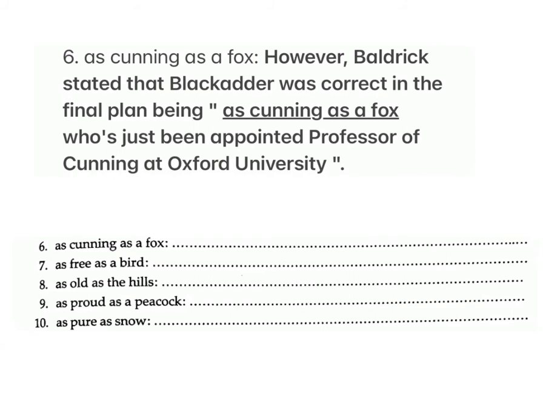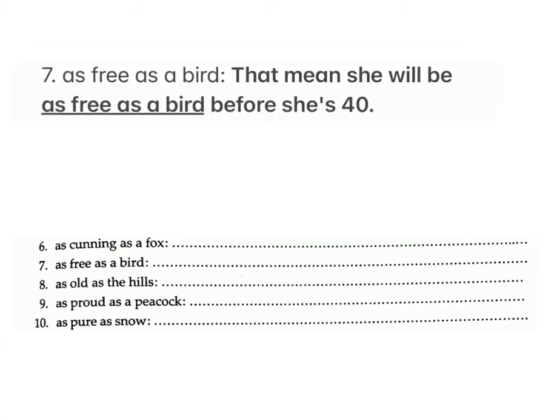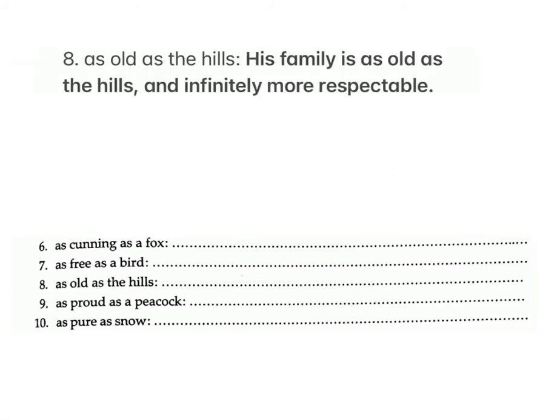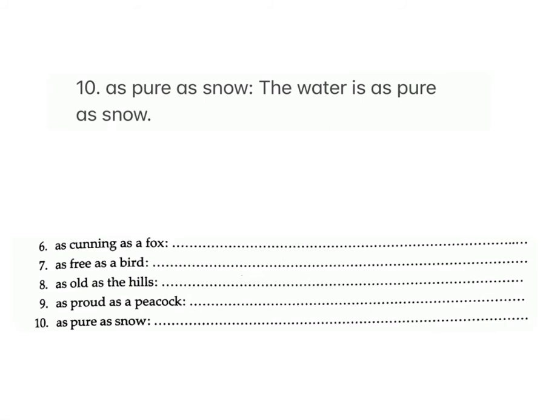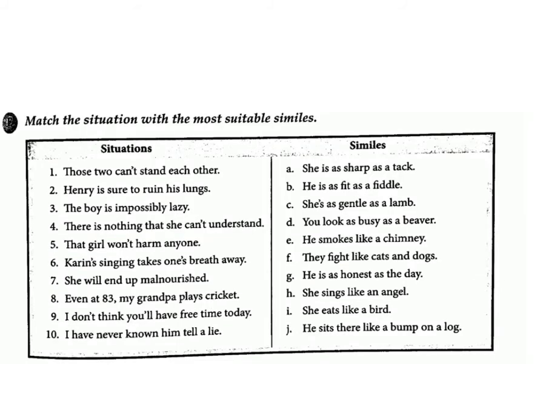6. As cunning as a fox — Baldrick stated that Blackadder was as cunning as a fox who's just been appointed professor of cunning at Oxford University. 7. As free as a bird — That means she will be as free as a bird before she's forty. 8. As old as the hills — His family is as old as the hills and infinitely more respectable. 9. As proud as a peacock — He was as proud as a peacock when he passed his driving test at the first attempt. 10. As pure as snow — The water is as pure as snow.